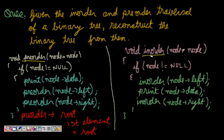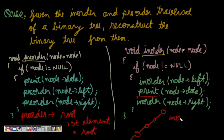Now let's look at in-order. In in-order, if node is not null, we call in-order on node left. It keeps going to node left until there is no more left child, then it prints the node data. So from in-order traversal, we get the leftmost element of the tree as the first element.